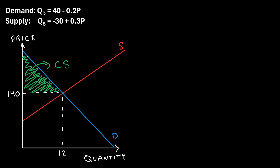For example, some consumers were willing to pay a price all the way up to, let's say, $200, but they only have to pay $140 because that's the equilibrium price — the selling price of this good. And there were some consumers also willing to pay, let's say, $160 for this good, but they also got to enjoy the benefit of only paying $140. So the sum of all of these transactions where the consumers would have paid more, but didn't actually have to, that's known as the consumer surplus.